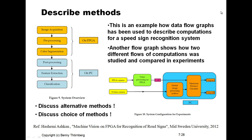A good thesis report is also capable of discussing other alternative methods that could have been used, and you should be able to motivate the choice of method you applied in your study. This example is taken from one of my master students, Ashkan Hashemi — machine vision system on FPGA for recognition of road signs, written at our university in 2012.